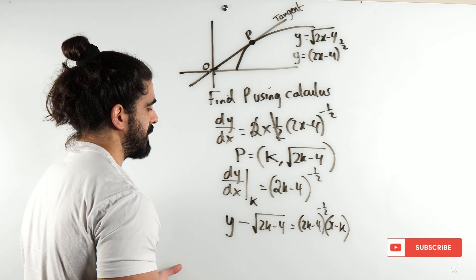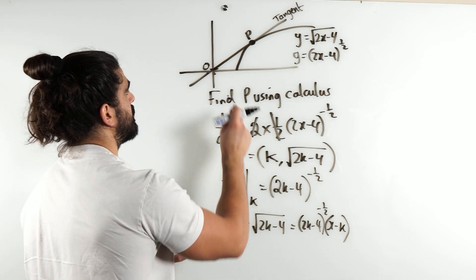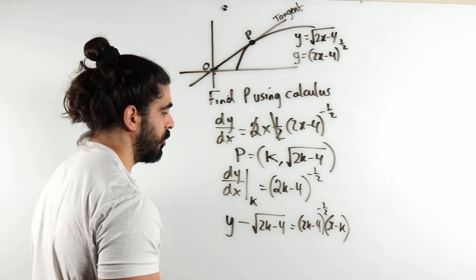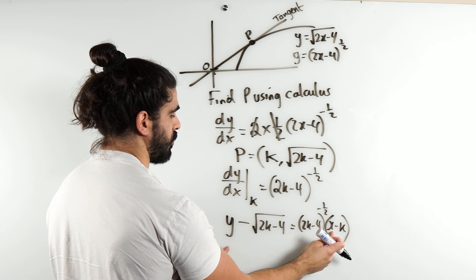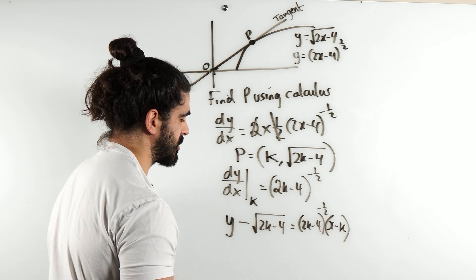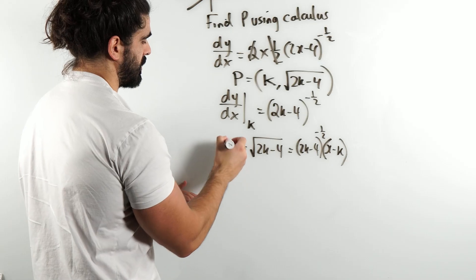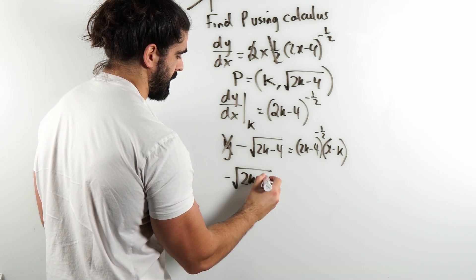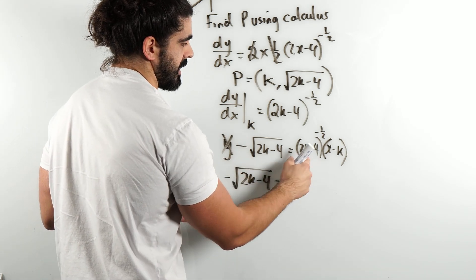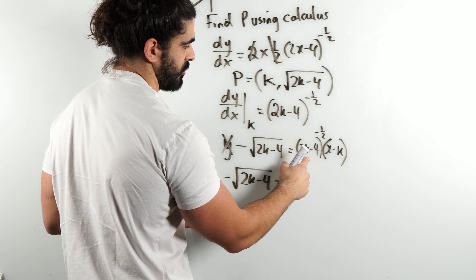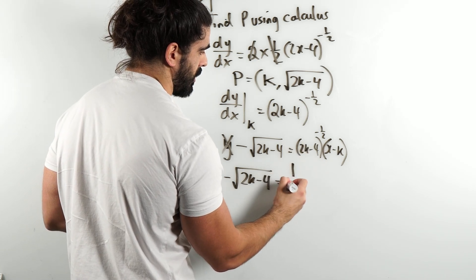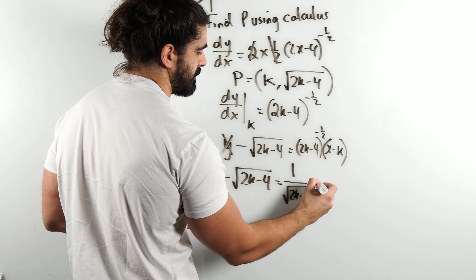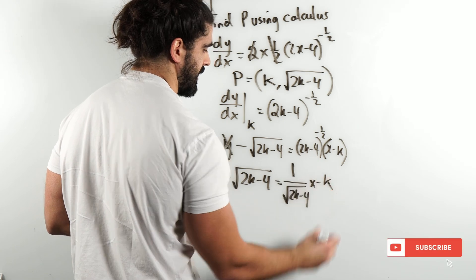Now, what's special about this line? We found that it goes through 0, 0. So, all we're going to do is substitute x and y to be 0, and then we're just going to solve for k. So, with this being 0, you're left with negative root 2k minus 4 is... Now, I'm going to convert this into the reciprocal. So, 1 over root 2k minus 4. Now, with x being 0, we're just timesing it by minus k.